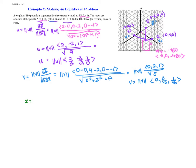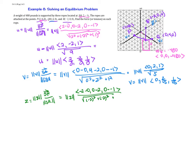Now we need to find z. Z equals the magnitude of z times vector SR over the magnitude of SR. Go ahead and try this on your own and pause the video. The answer: magnitude of z times (-2-0), (0-2), (0-(-1)) = <-2, -2, 1>, all over the square root of 4+4+1 = 3. So z equals magnitude of z times <-2/3, -2/3, 1/3>.